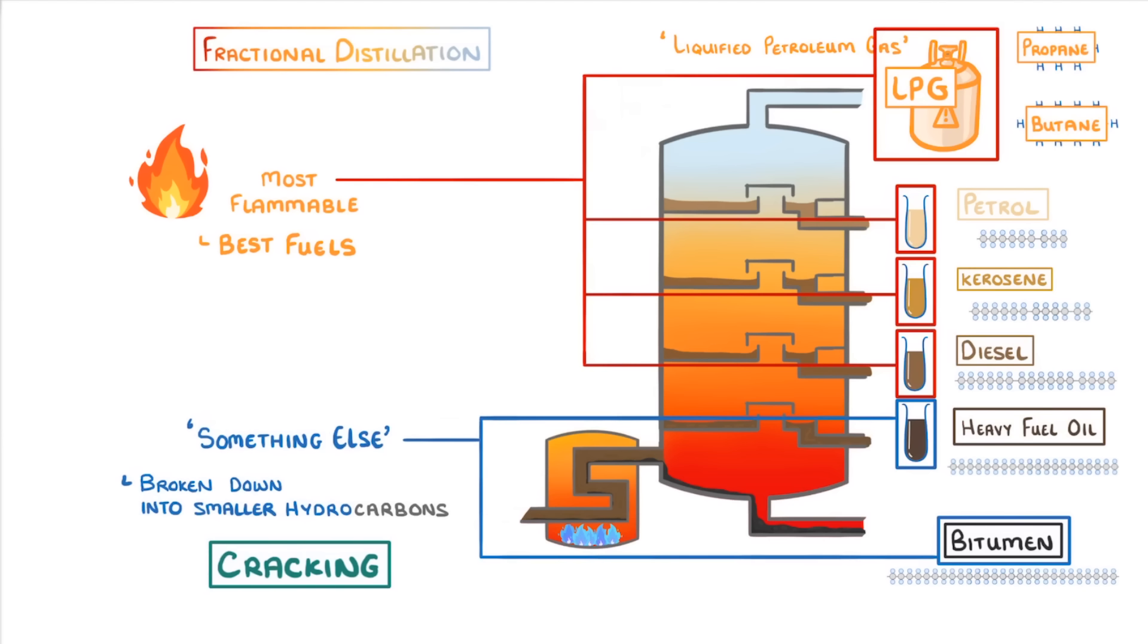The last thing to point out is that as well as all of these fairly direct uses that we mentioned, petrochemicals, which is what we call all of these substances that we get from crude oil, can also be used as feedstock, which just means raw materials for the petrochemical industry. You use them to make things like solvents, lubricants, polymers, and detergents.